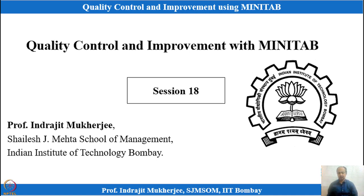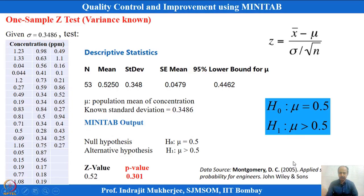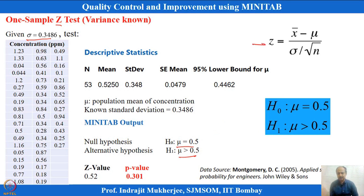In the previous session we were talking about hypothesis testing and the one-sample Z test. One example we took was concentration in PPM which was monitored. Sigma was known, which is why we used the Z test. We wanted to test whether mu equals 0.5 versus mu greater than 0.5. The Z statistic is calculated from the sample X-bar, the known sigma, and the number of observations n, with mu₀ = 0.5.